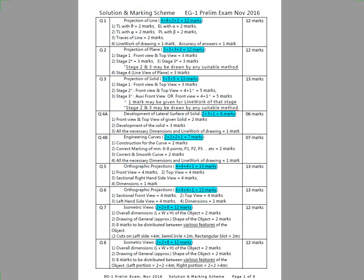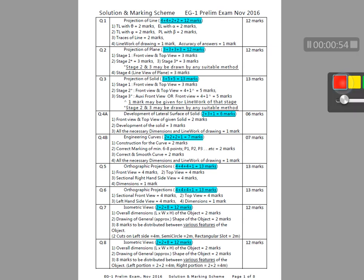Here we go with solutions and marking scheme for engineering graphics. The marking scheme: question number 1 is line, 2 is plane, 3rd is solid, 4th is development, and 4b will be on curves. The first smart strategy is to attempt question number 4a, which is on development of lateral surface.